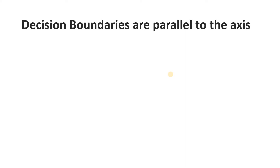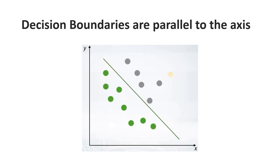The first and very important disadvantage is that decision boundaries are parallel to the axis. The decision boundary in a decision tree is always parallel to the axis, and that creates a huge problem. Consider a particular distribution of data where data points belonging to one class are shown in green and another class is shown in gray — they are perfectly linearly separable.